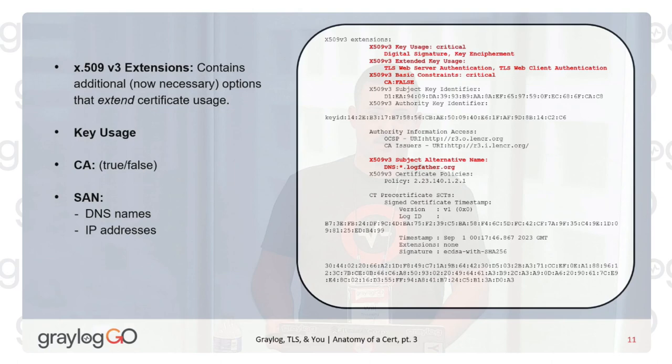Lastly, the subject alternative name — this may actually be the most important field in the entire certificate, because modern browsers, modern as in probably since 2015, base verification on what's in the subject alternative name or SAN, not the common name. The SAN lists all DNS and/or IP addresses that this certificate is supposed to represent. In our case, we need it to represent *.logfather.org, though you can also put IP addresses in there.